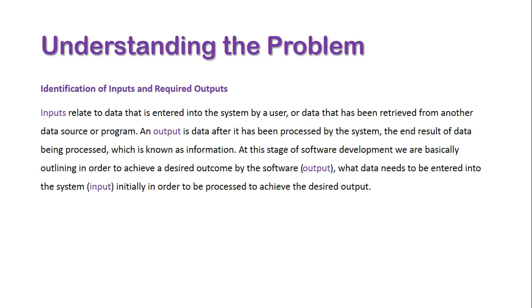Next, we're looking at the identification of inputs and outputs. An input is data entered into the system, predominantly from a user but sometimes from other software. An output is data after it has been processed, classified as information—the end result of the software. At this stage, we're outlining what data needs to be entered as input to achieve the desired output.